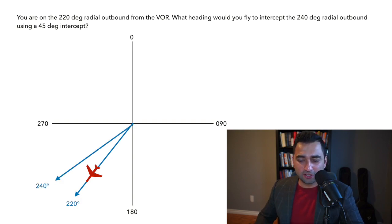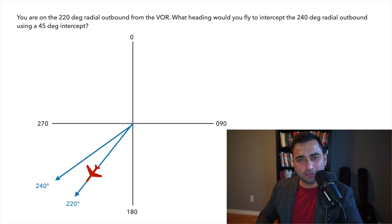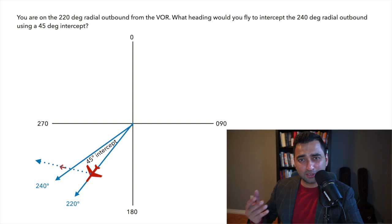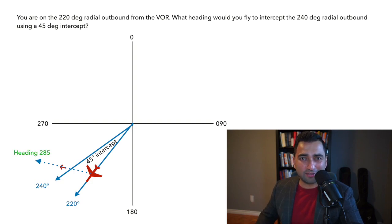Next, draw the desired radial, which in this case is 240 degrees. Just by visualizing it on the piece of paper, you can see that the desired radial is going to be off to our right hand side. So using a 45 degree intercept to the right, 240 degrees plus 45 gives us an intercept heading of 285 degrees. You can see it's quite simple when you visualize it on a piece of paper.